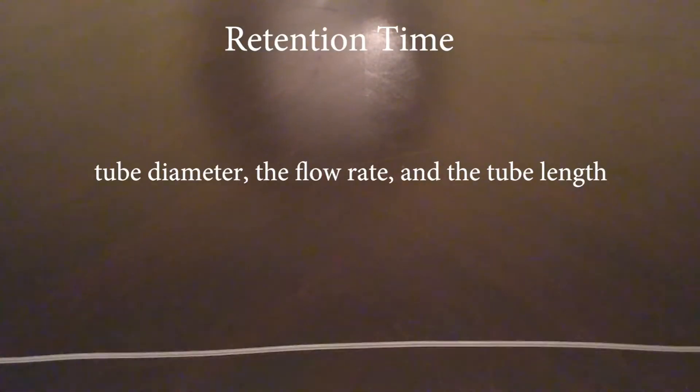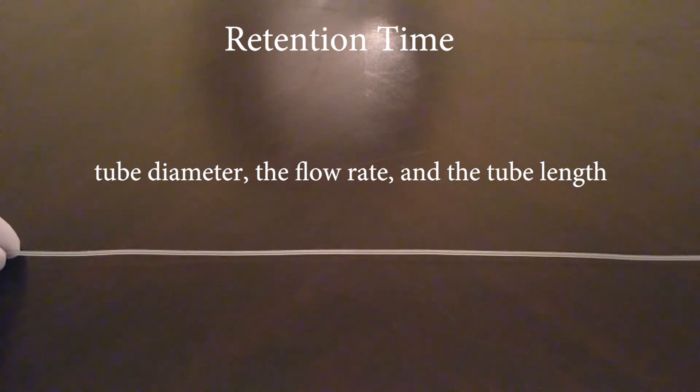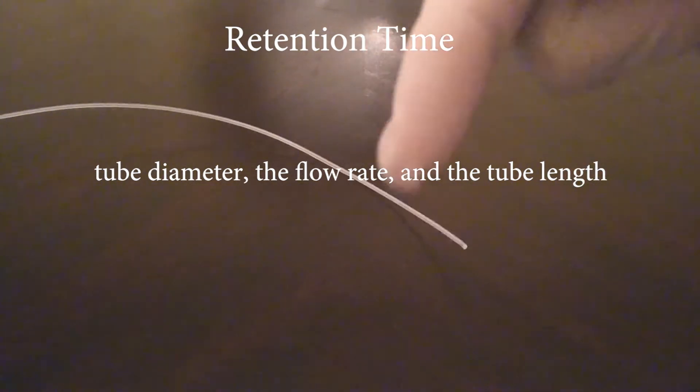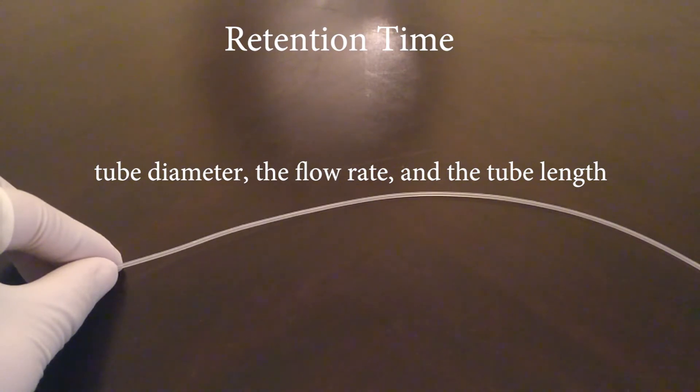To determine the reaction time, you need to know the tube diameter, the flow rate, and the tube length. Using these, you can determine the retention time, which correlates to the reaction time. In the description is a spreadsheet that can be used to determine the retention time for a given flow rate, tube diameter, and tube length.